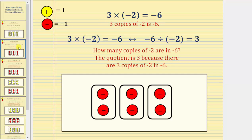Now let's consider the product 3 times negative 2 equals negative 6, which means 3 copies of negative 2 is negative 6. Using the color counters, here's our model for 3 copies or 3 groups of negative 2, which we can see is negative 6.